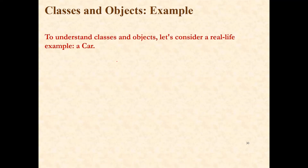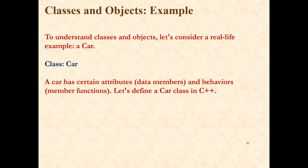What is a class and object — we will understand with the help of an example. To understand classes and objects, let's consider a real-life example: a car, which is also one of the objects. We will consider a car as an object which has got its own attributes and behavior. Attributes mean its characteristics, its data. So we will define a class that is a car. A car has certain attributes, which are nothing but its data members, and behaviors, that is the member functions. Let's define a car in C++ now in this example.